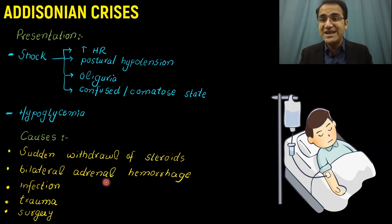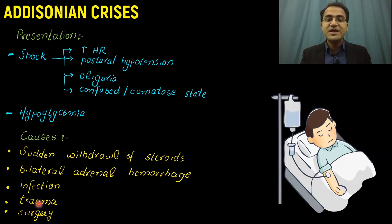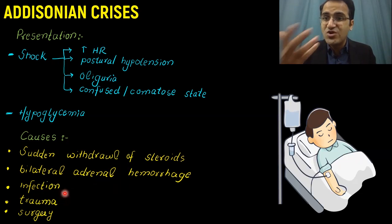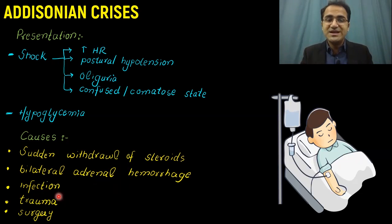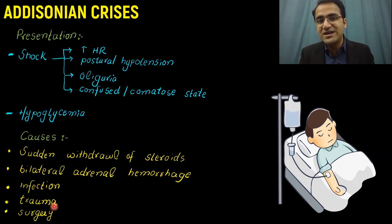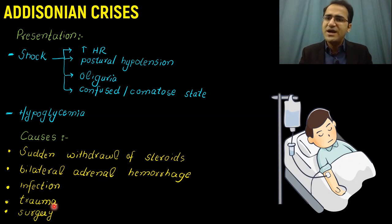Other causes include bilateral adrenal hemorrhage, as occurs in meningococcal infection. Any infection such as TB that can destroy the adrenal glands, as well as trauma, surgery, or autoimmune destruction of the adrenal glands, can suddenly put the patient into Addisonian crisis.